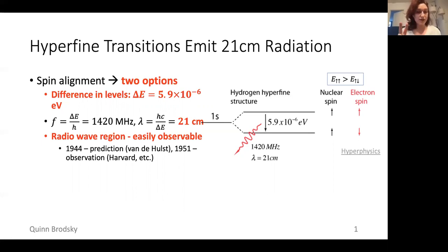If the spins are in the same direction, the energy of the state is a little bit higher, and if the spins are in the opposite directions, the energy is a little bit lower. The energy difference between these two states is about six microEV, and when hydrogen falls from the higher energy state to the lower energy state, it emits radiation that has a wavelength of 21 centimeters.